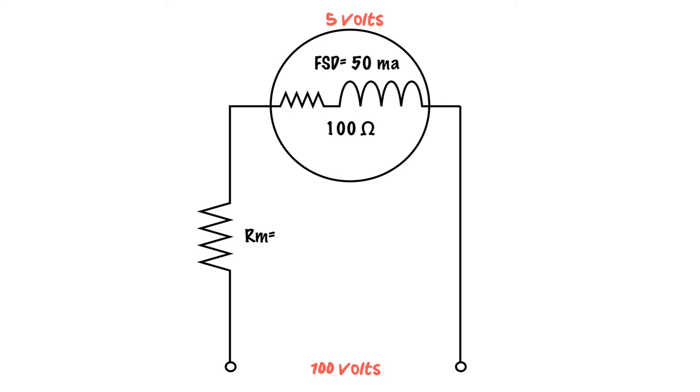We're going to use Ohm's law. 50 milliamps times 100 ohms gets us 5 volts. That means the maximum that this galvanometer can see is 5 volts, but we're reading 100 volts. So what are we going to do with the rest of that voltage?